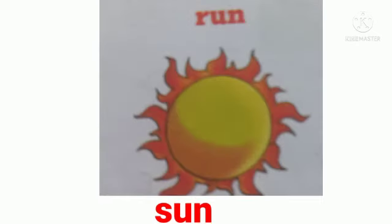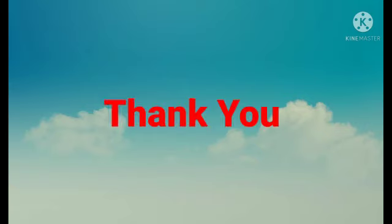In this picture, the word is 'run' and the picture given is 'son,' so the rhyming words are: run, son. In this picture, the word given is 'get' and the picture is 'net,' so the rhyming words are: get, net.